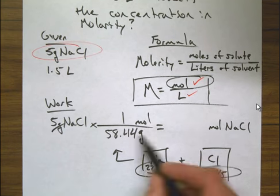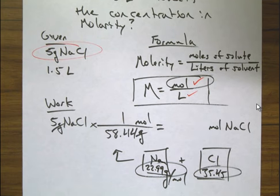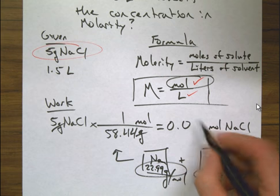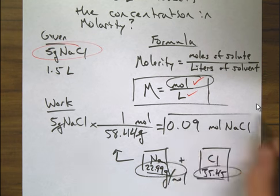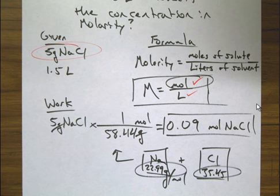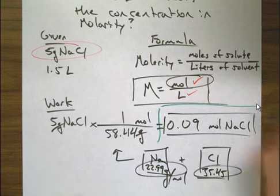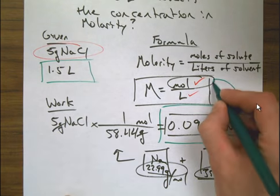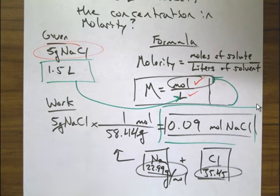So the grams cancel out should be from there 5 divided by 58.44. And that gives me a number of moles as 0.09 moles. I'm rounding to sig figs on this problem. So if you're wondering why it didn't come out 0.085555, it's because I'm rounding to sig figs. So now I have the information I need to solve the problem. I have the moles. I have the liters which I'm putting in boxes right here. Which I can now plug into my formula to figure out molarity.